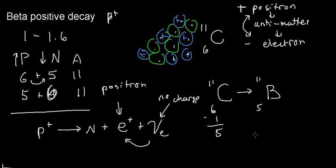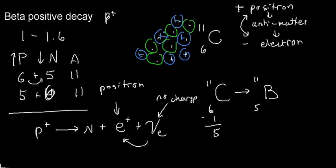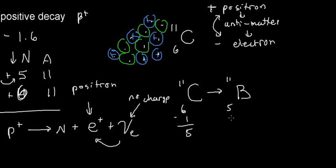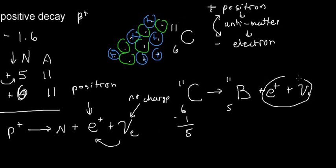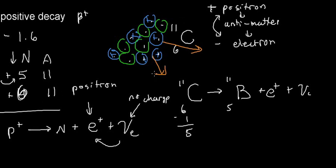Also created here are a positron and a neutrino. Since they do not belong in a nucleus, they're tossed out of it.